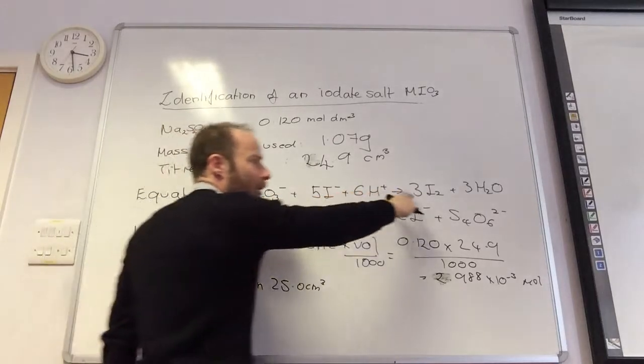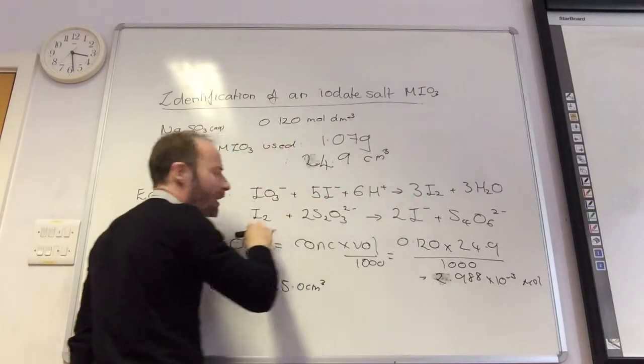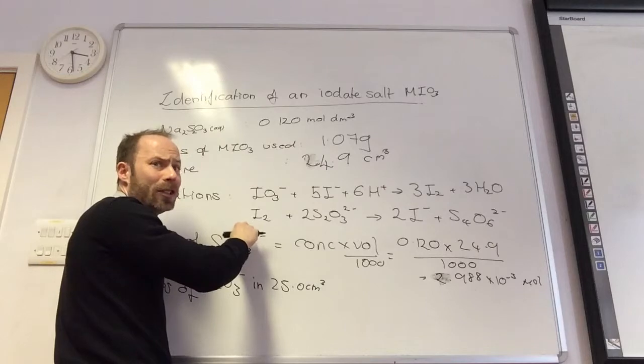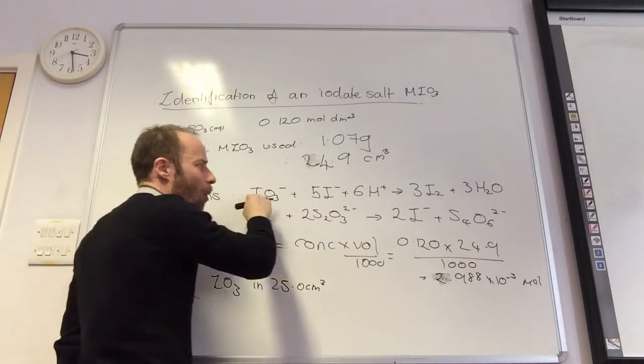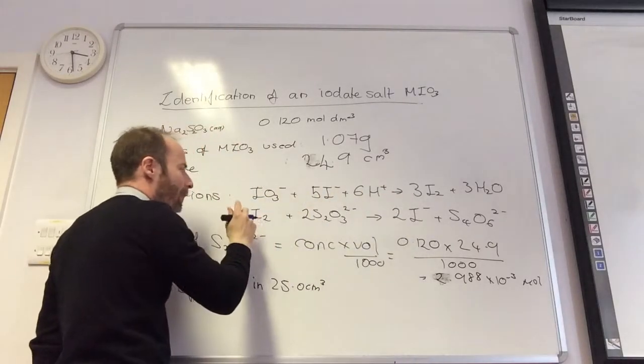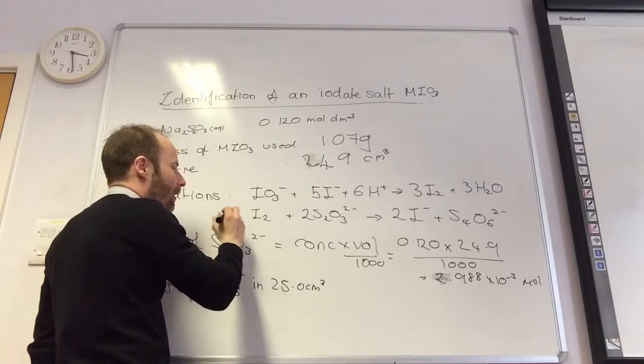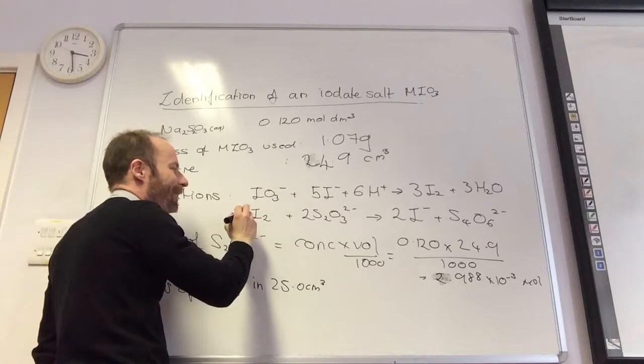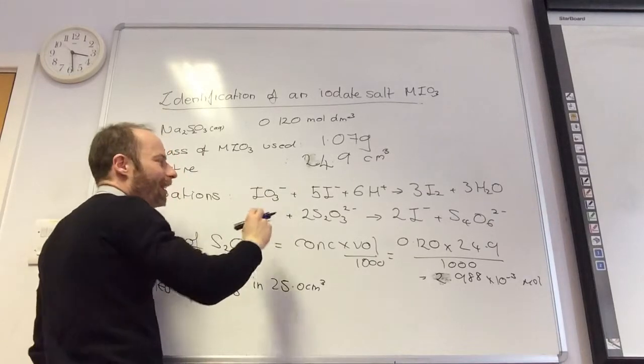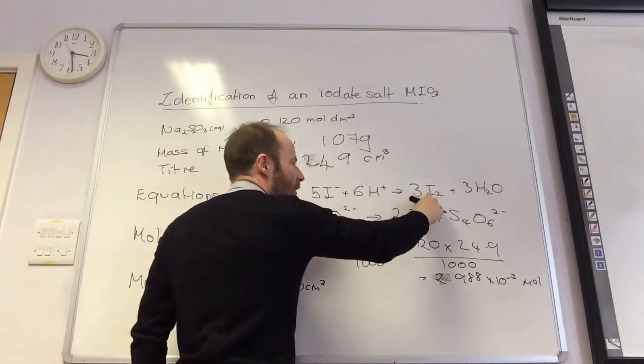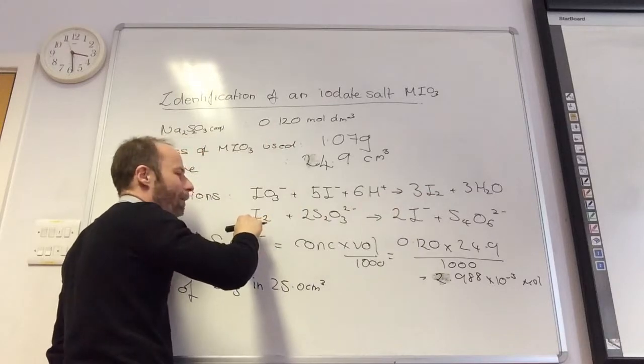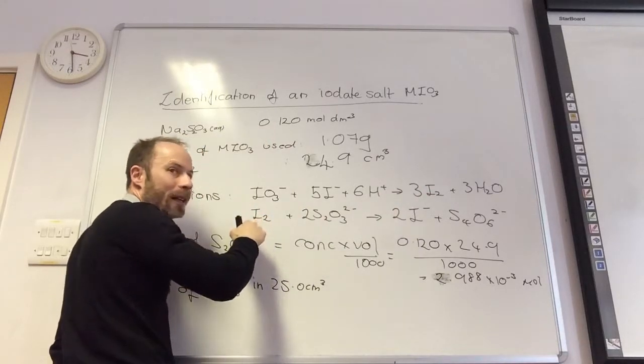That's what I've worked out, but one of those makes three of those. But I've only got one here, so what do I need to do to this equation? I'm going to multiply this by three. That becomes 3 I2 plus 6 S2O3 2-.